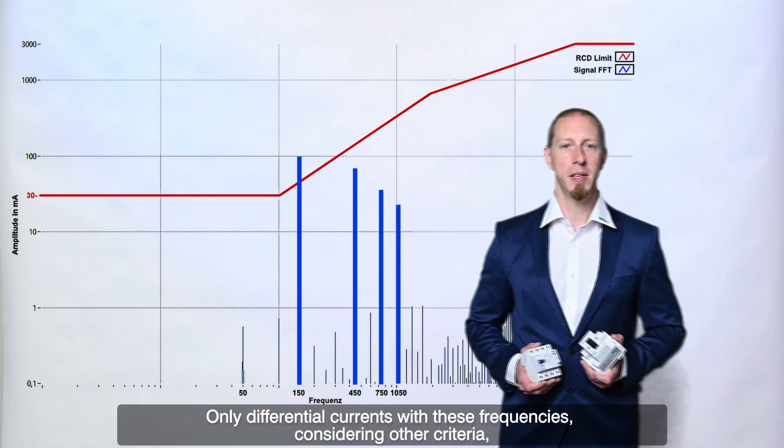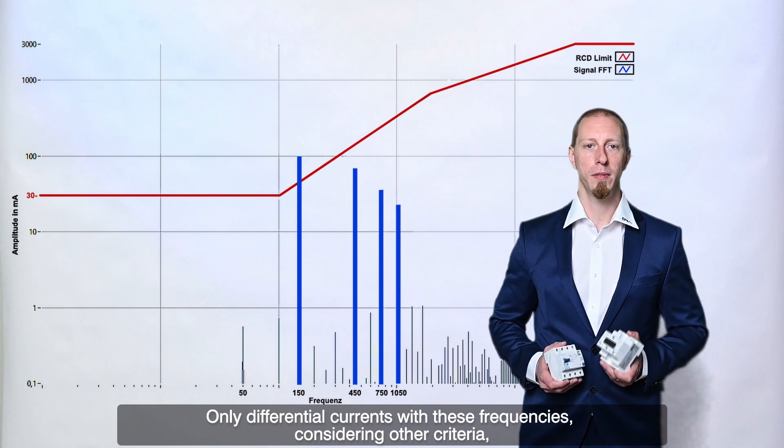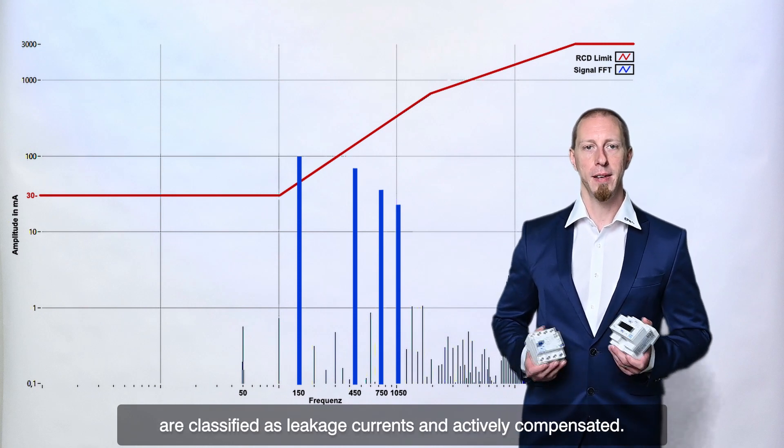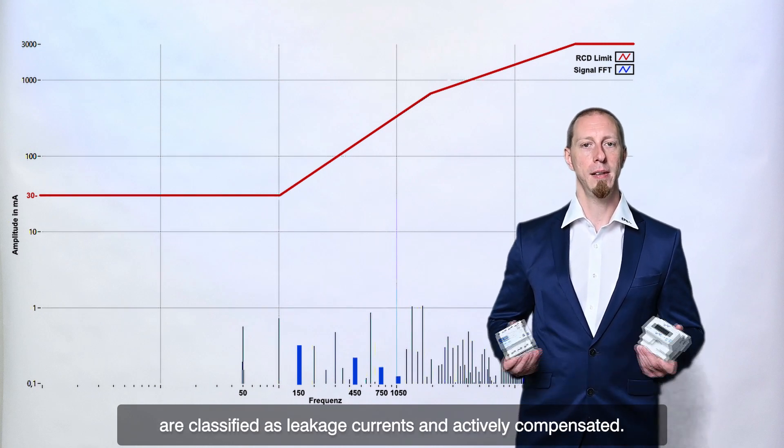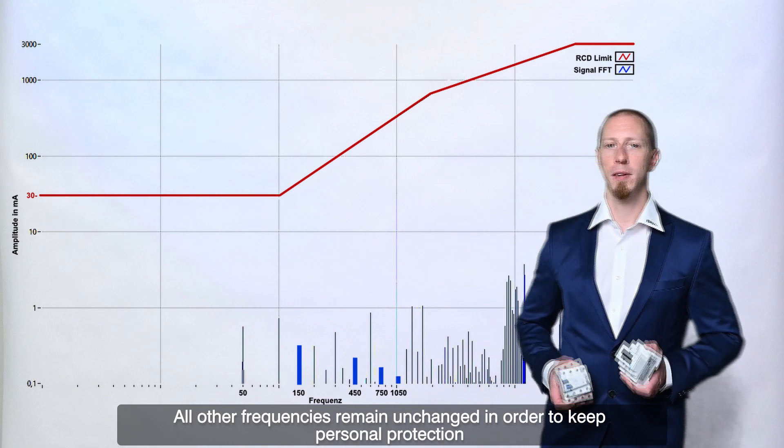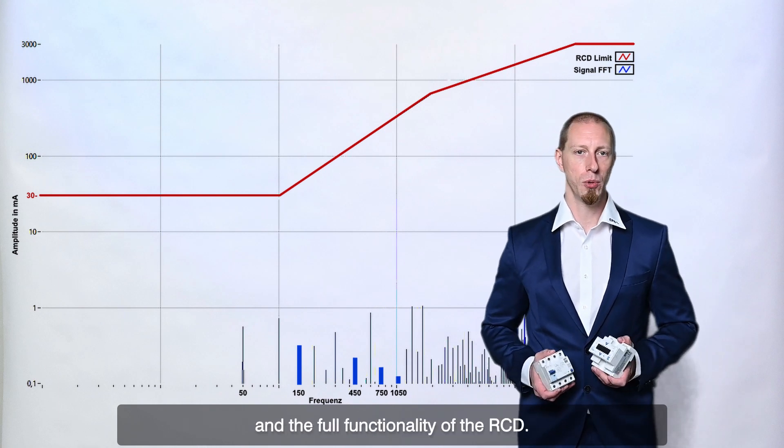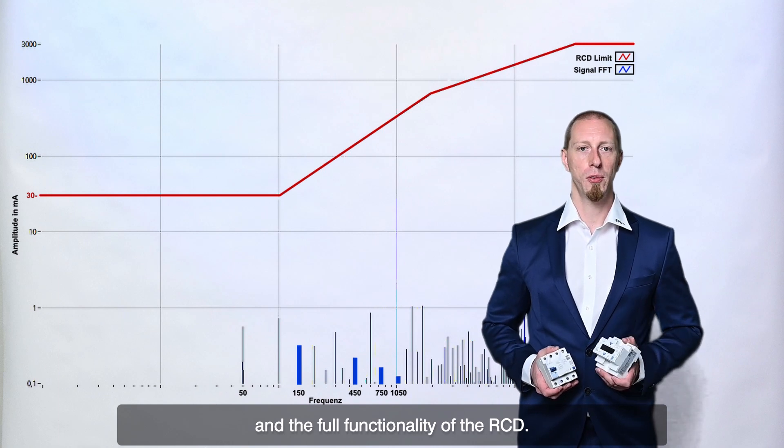Only differential currents with these frequencies, considering other criteria, are classified as leakage currents and actively compensated. All other frequencies remain unchanged in order to keep personal protection and the full functionality of the RCD.